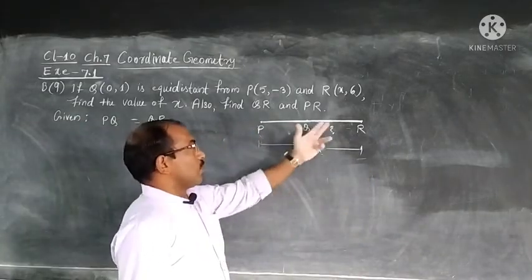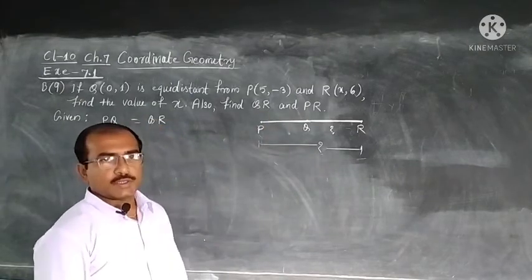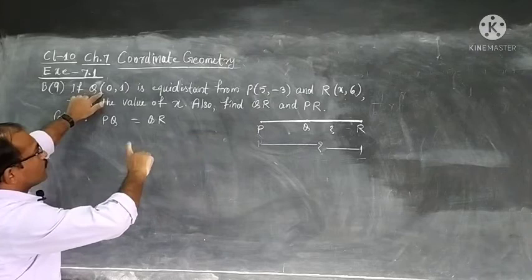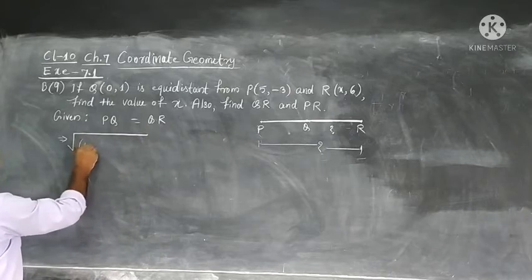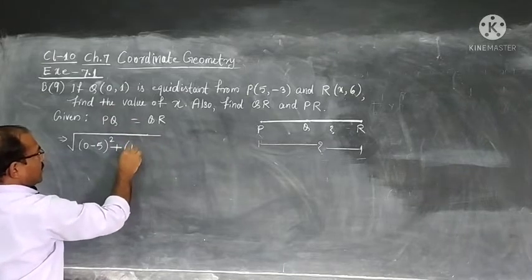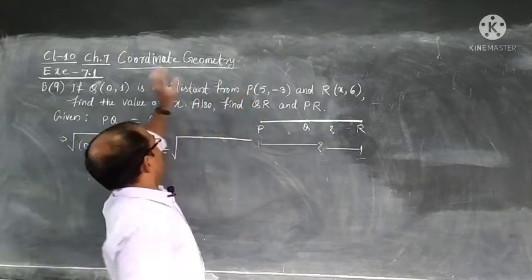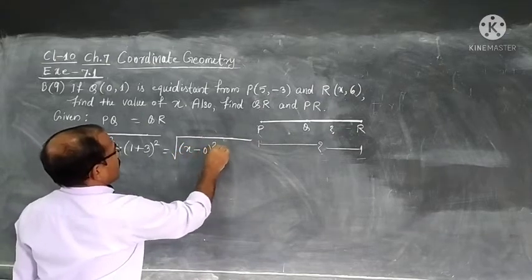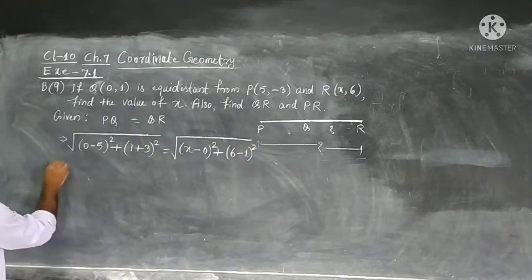These two are equal distance. What will be this that will be PQ and this will be both total distance anyway it is simple work we will see this point PQ is here. x2 minus x1 we will get (0-5)² plus (1+3)², (1+3)² whole square. When we say QR we will look at QR. (x-0)² plus (6-1)² whole square we simplify again root we see.